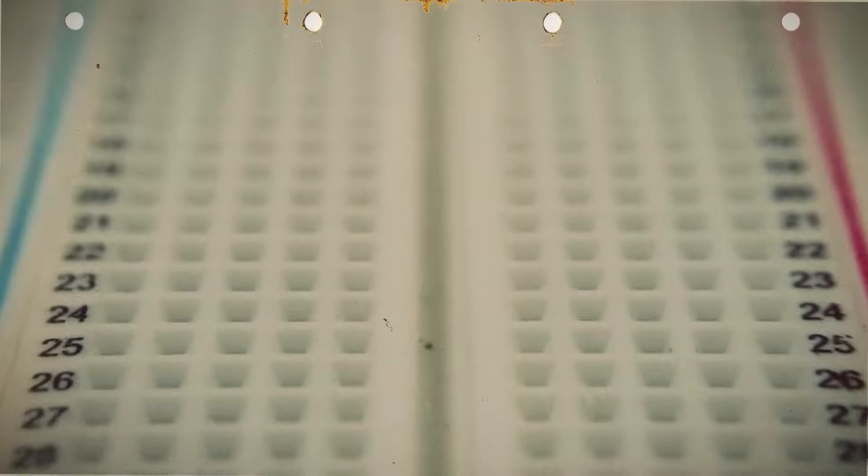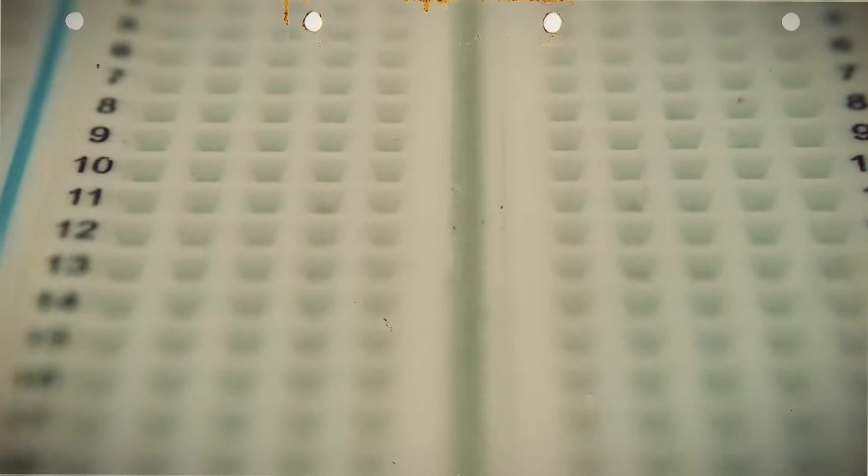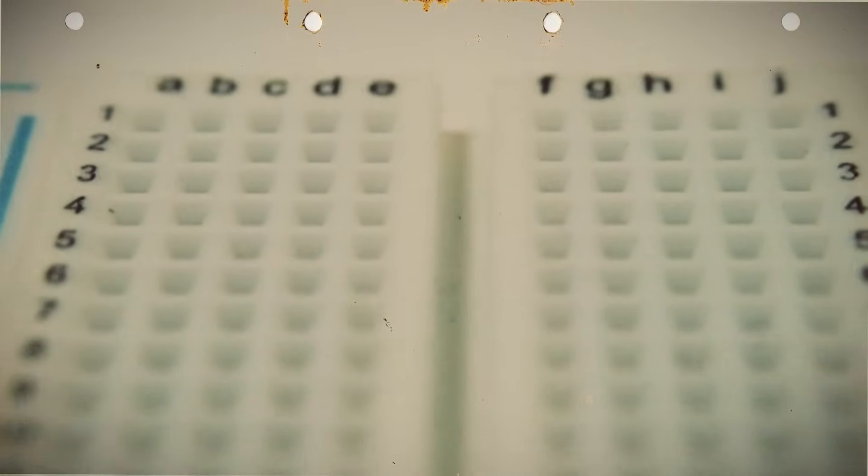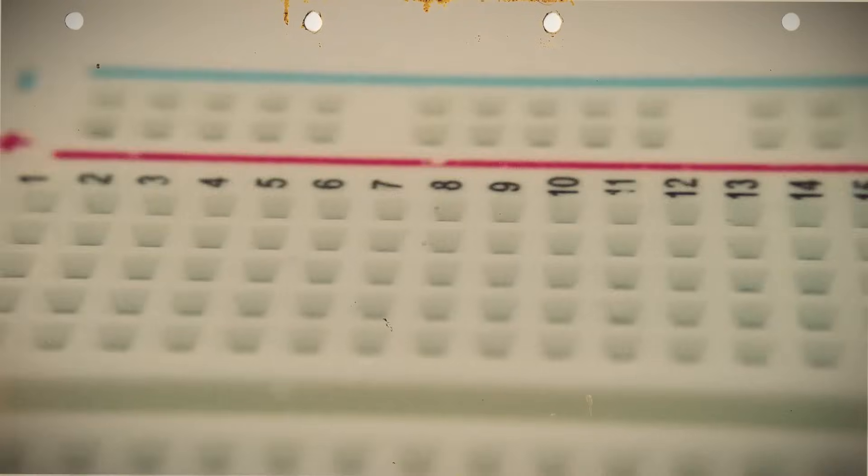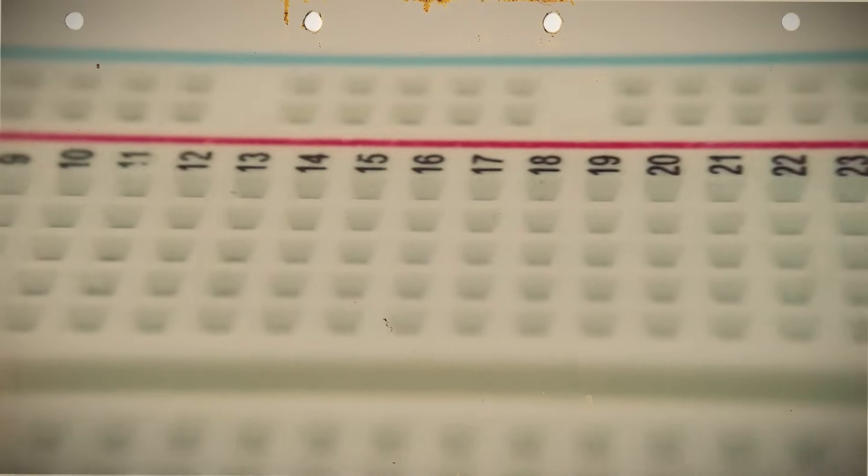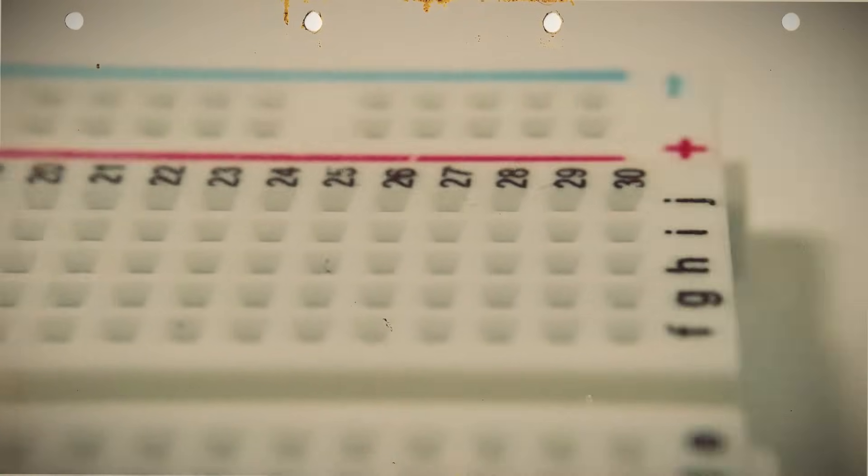These inner sets of holes are called terminal strips. While the power rails run the length of the board, the terminal strips are perpendicular to the power rails. Each column of holes is separated from the next column.